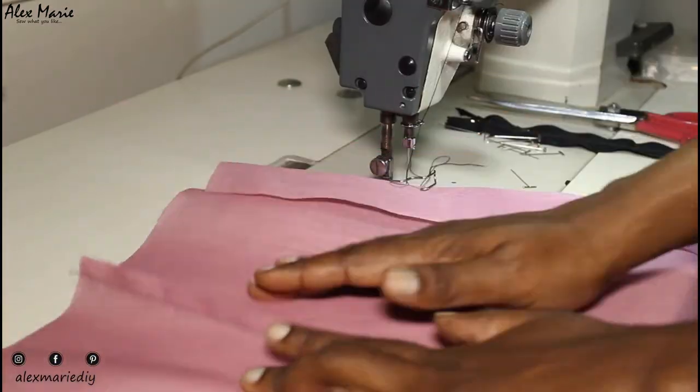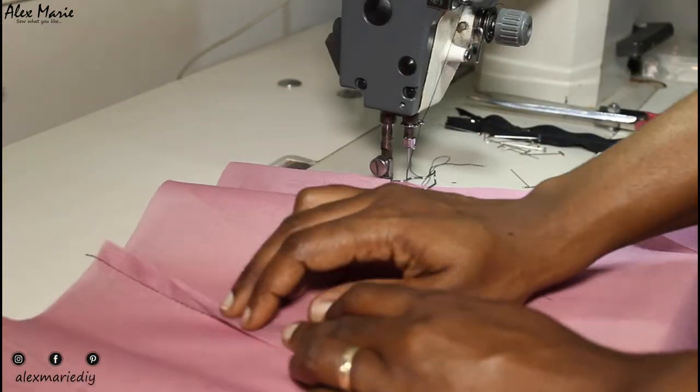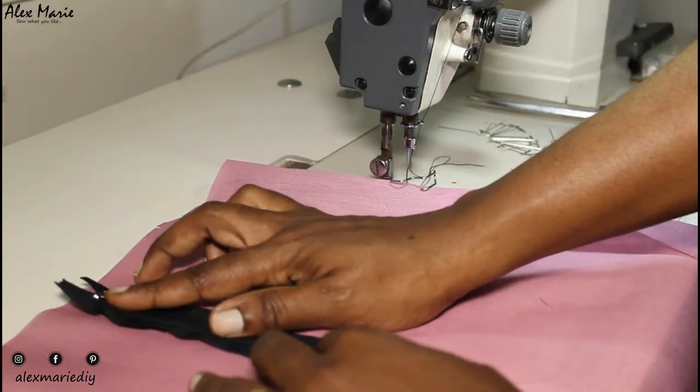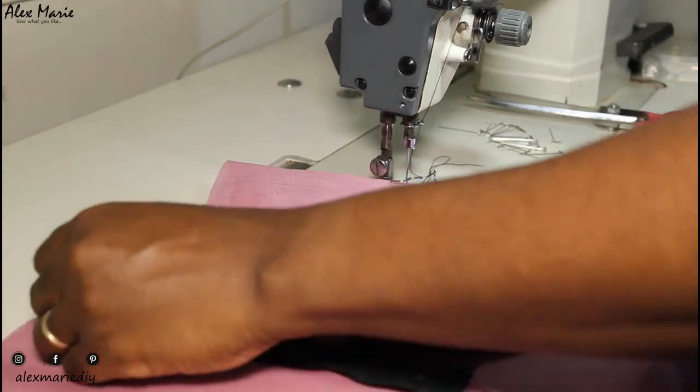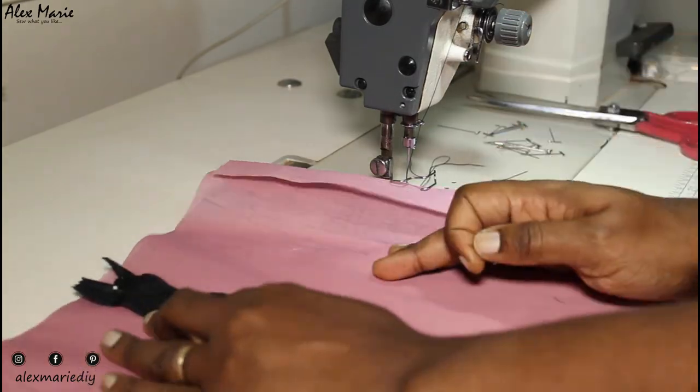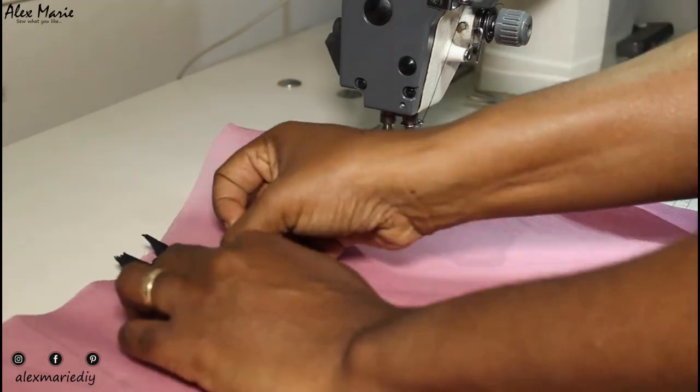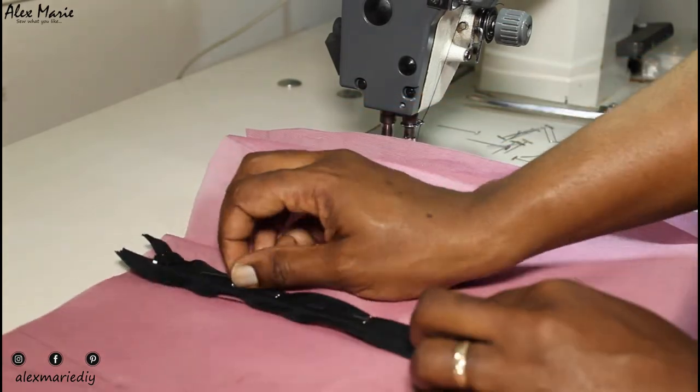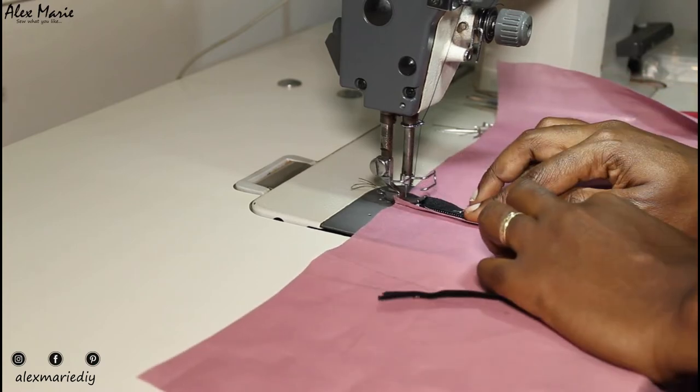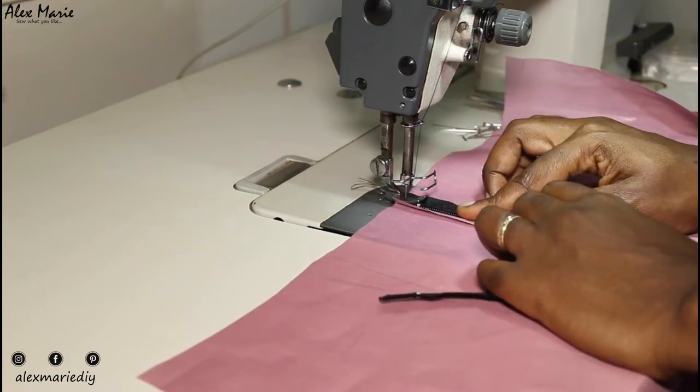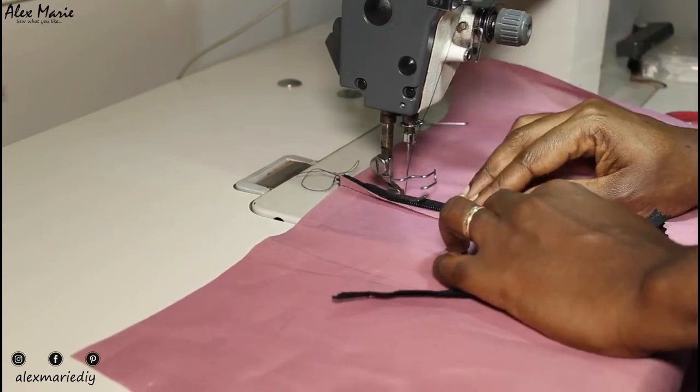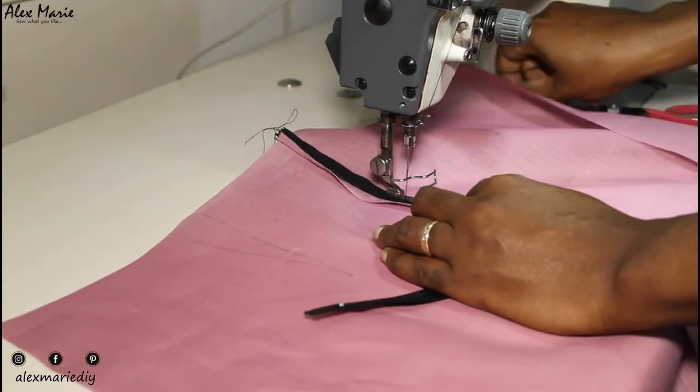Now we're just going to put the zipper along the center front seam. I will press the seam open with my fingers, put our zipper face down and we're just going to sew around it. I pulled the zipper pull out of the way just to make it easier, because sometimes, like the zipper I'm using, the zipper pull is quite big and it's hard to sew around it.